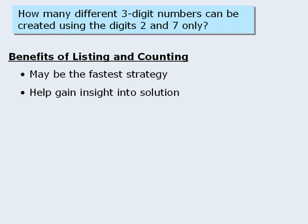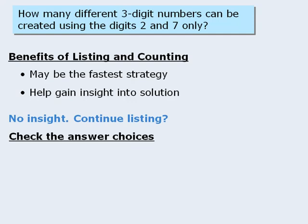Now, let's say that we begin listing outcomes and in the process we fail to gain any insight into a faster way to solve the question. At this point, should we continue listing possible outcomes? To answer this question, we must first examine the answer choices.